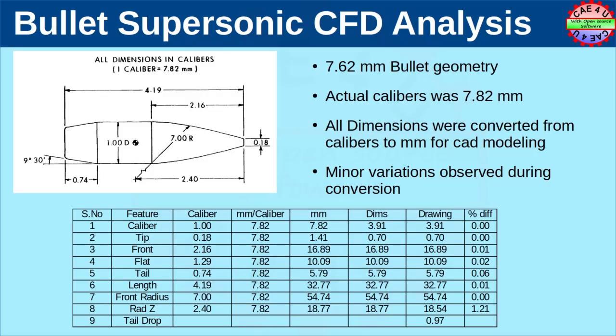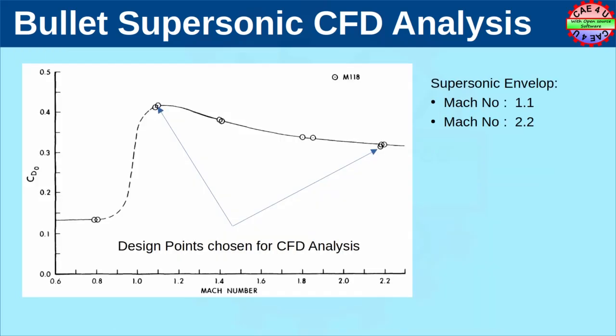The geometry used in this simulation is shown here. Though it is named a 7.62 mm bullet, the actual caliber — which is the maximum diameter of the bullet — corresponds to 7.82 mm. As the dimensions are specified in calibers, for ease of modeling all dimensions are converted into millimeters. When the model was generated, there were some minor differences observed. The maximum difference was about 1.2%. The objective is to find the drag coefficient and verify the results with openly available literature.